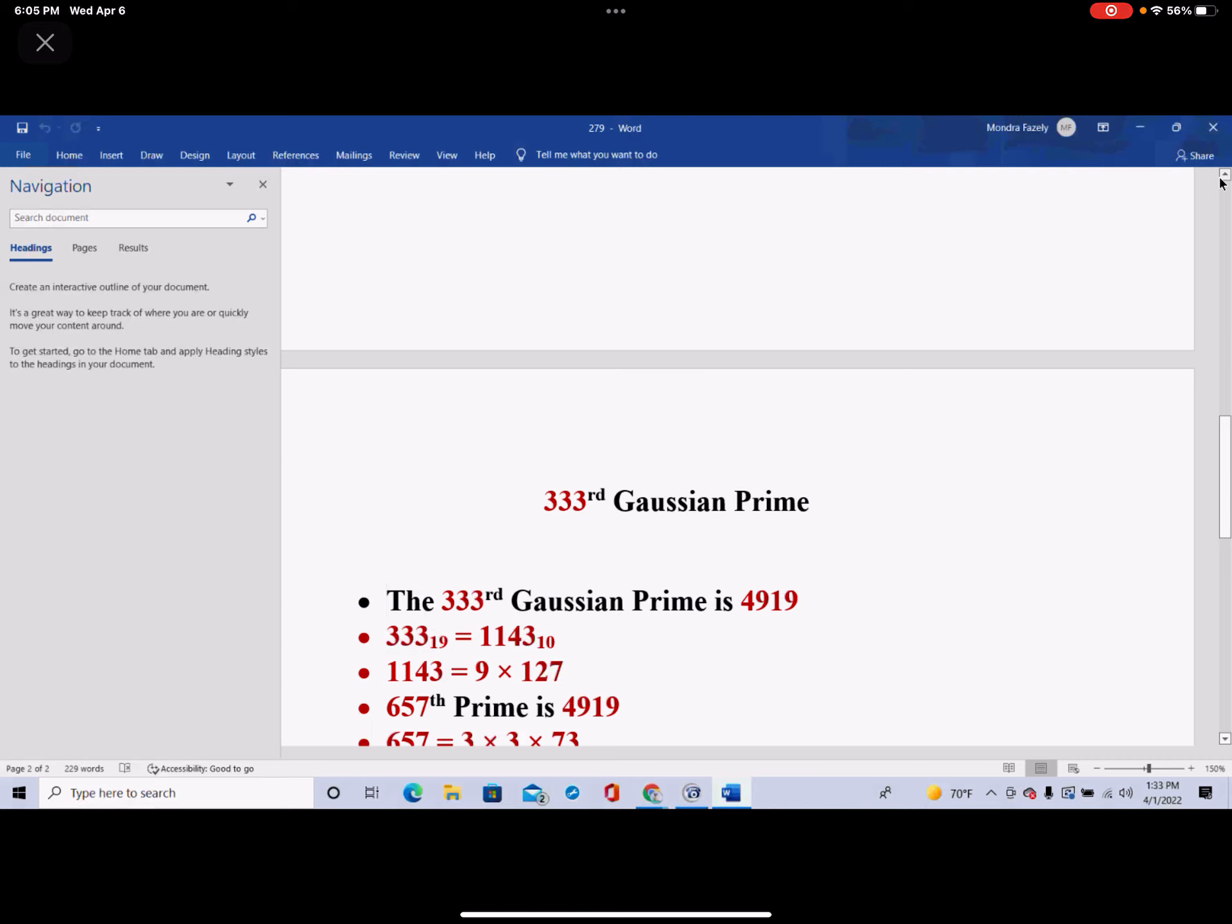And 333 in base 19 is equal to 1143 in base 10, and 1143 is equal to 9 times 127. So this 4919 is sort of like a linchpin here for this methodology. Now, we'll see how it actually comes back to the Quran.